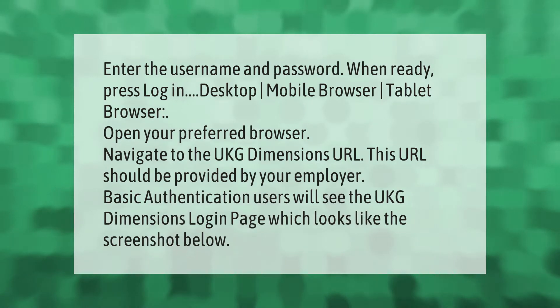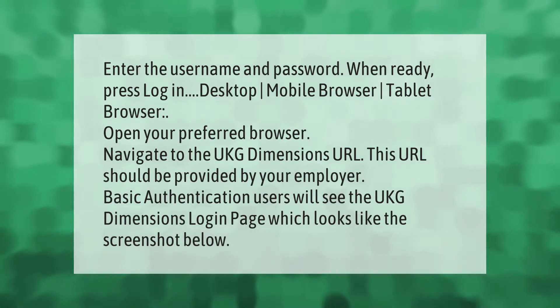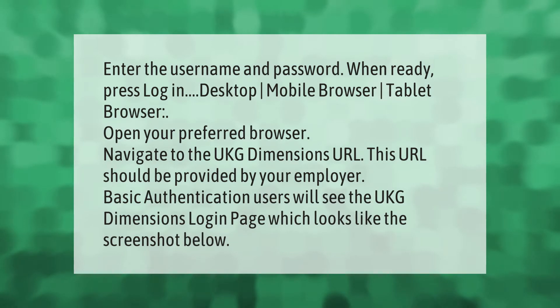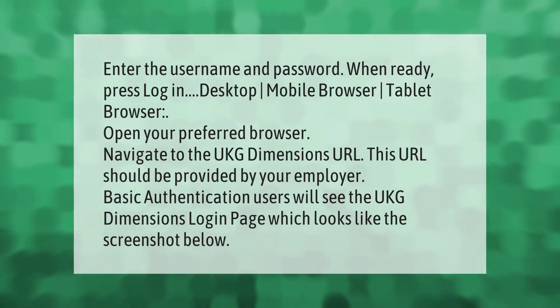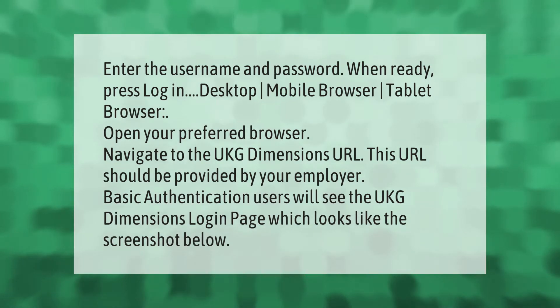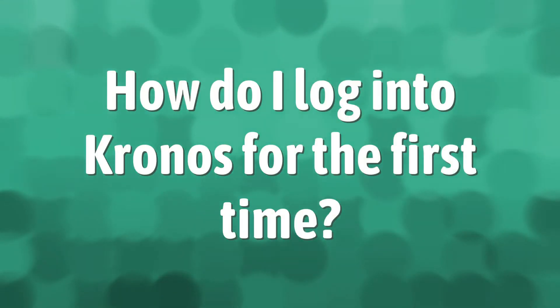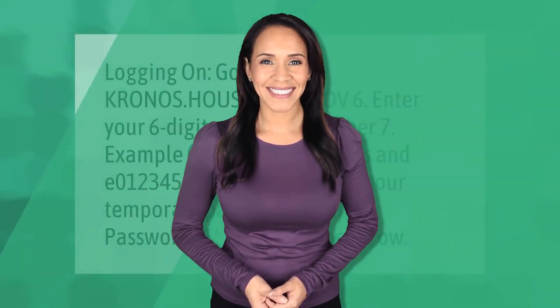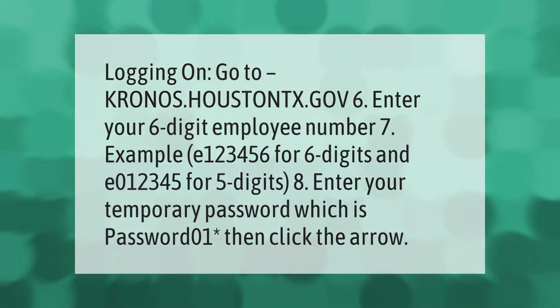Enter the username and password; when ready, press login. On desktop, mobile browser, or tablet browser, open your preferred browser and navigate to the UKG Dimensions URL. This URL should be provided by your employer. Basic authentication users will see the UKG Dimensions login page, which looks like the screenshot below.